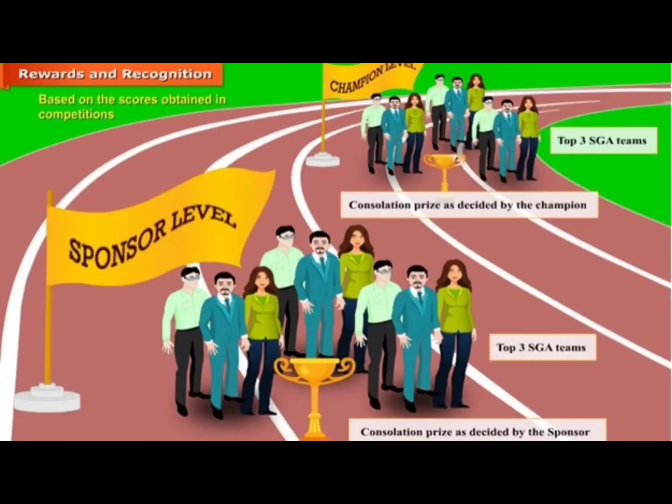All SGA circles nominated from their respective sponsors, along with the black band circles from the previous year's apex level competition, participate at the apex level competition. All SGA circles that complete at least one Kaizen every month receive some sort of reward at the end of every quarter.